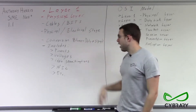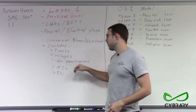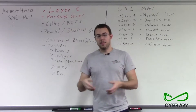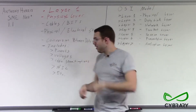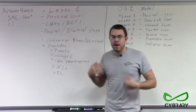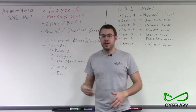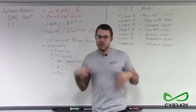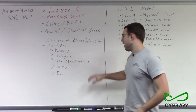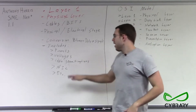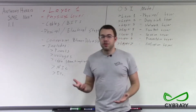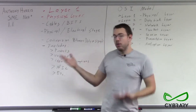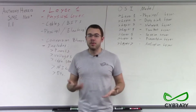The physical layer includes everything from pinouts — such as the pinouts on our cables and the pins we plug into connectors — to voltages. When we measure the voltages traveling across a cable, those are considered layer one: physical voltages. Cable specifications are all layer one, and network interface cards are also layer one components. Network interface cards are the physical ports and physical cards inside our computers.